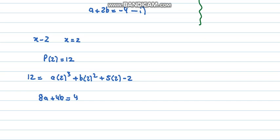So taking 4 common would give me 2a + b equals 1. So this is my equation number 2.